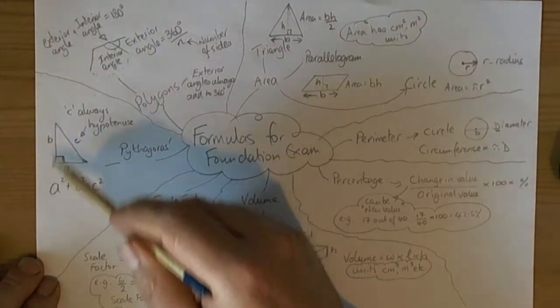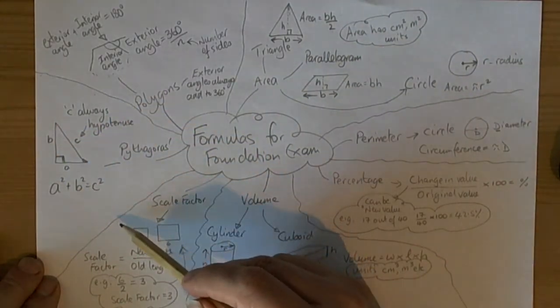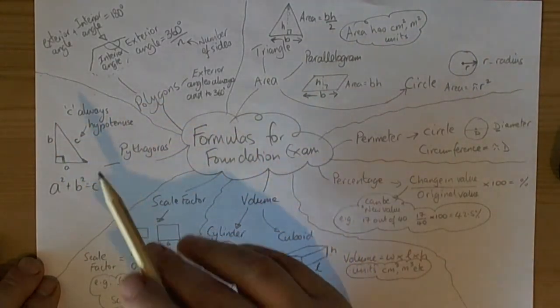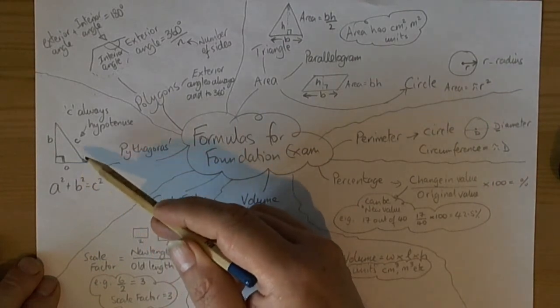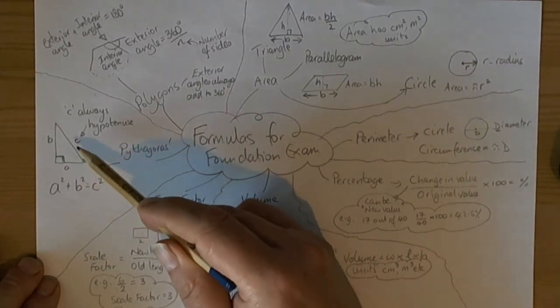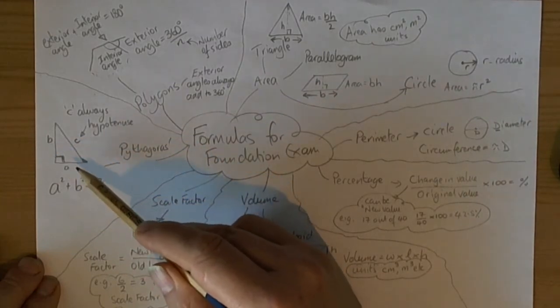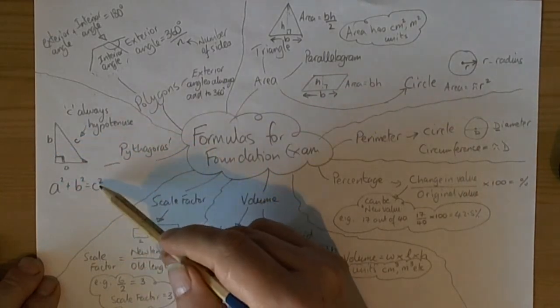For Pythagoras, a question towards the end of the exam paper that has a right-angle triangle given to you directly, or where you can make a right-angle triangle from the picture given, and it's asking you to find a missing length given two of the lengths—then it's going to be Pythagoras.